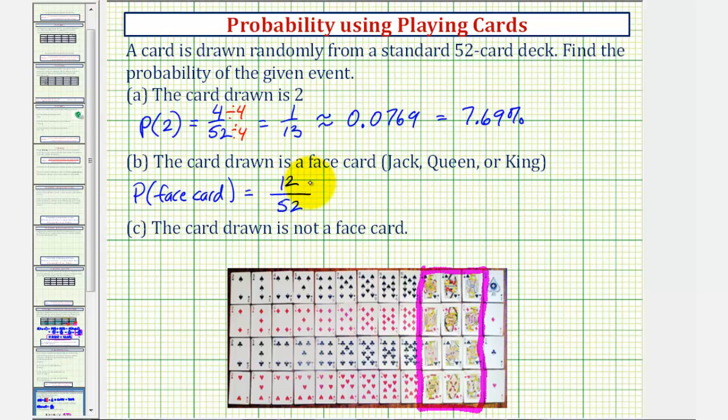Again, this simplifies. Common factor of 4. So this would be 3/13 as the exact probability.